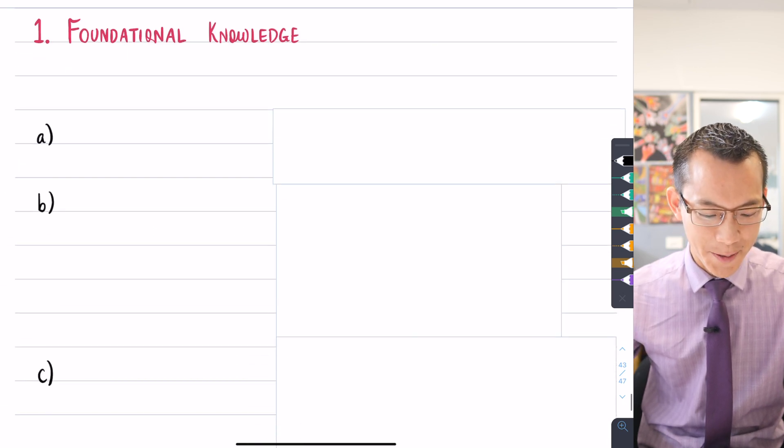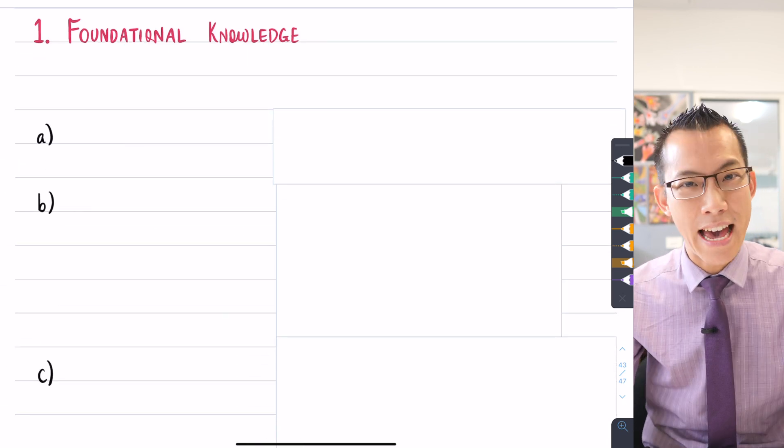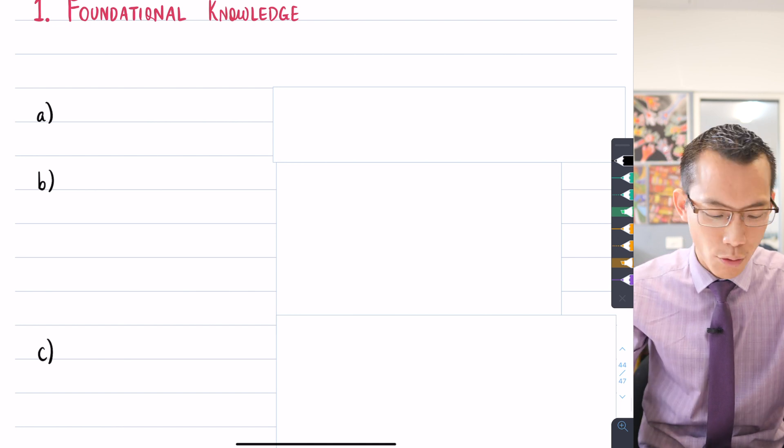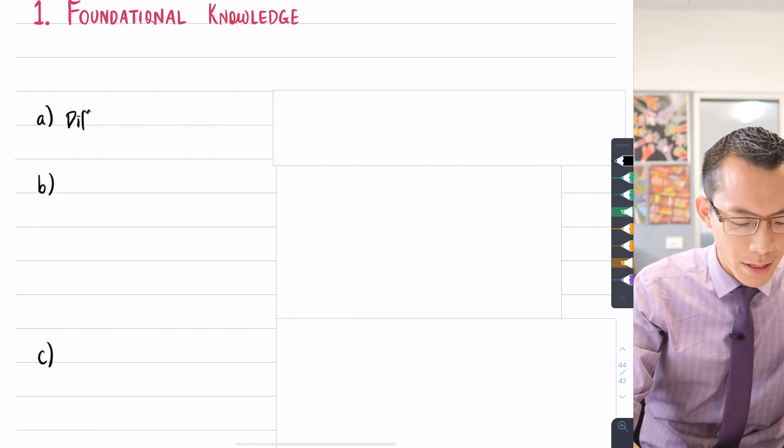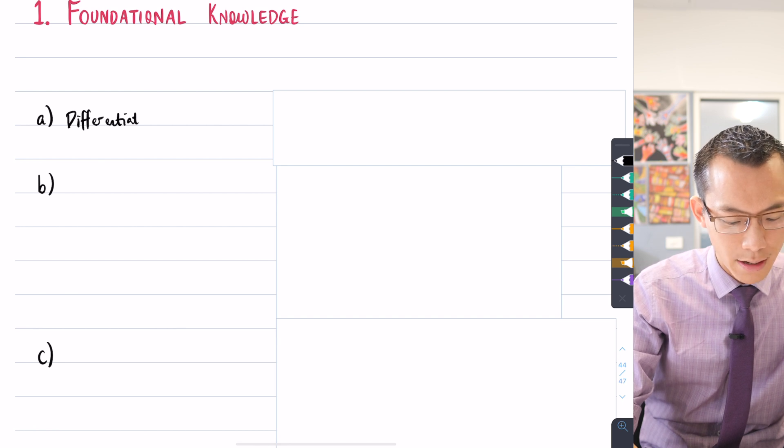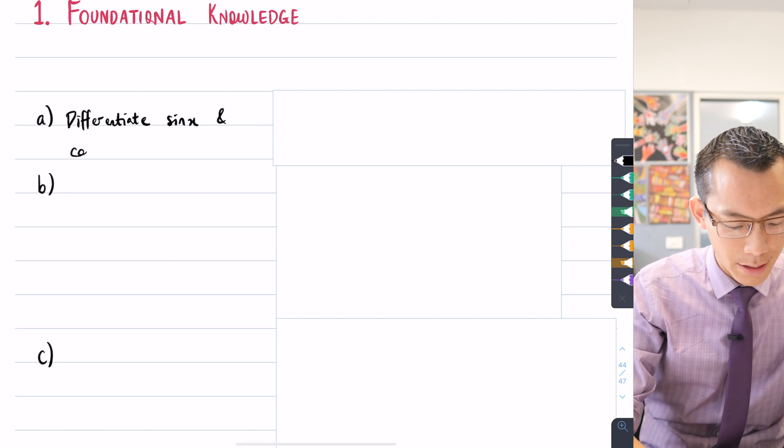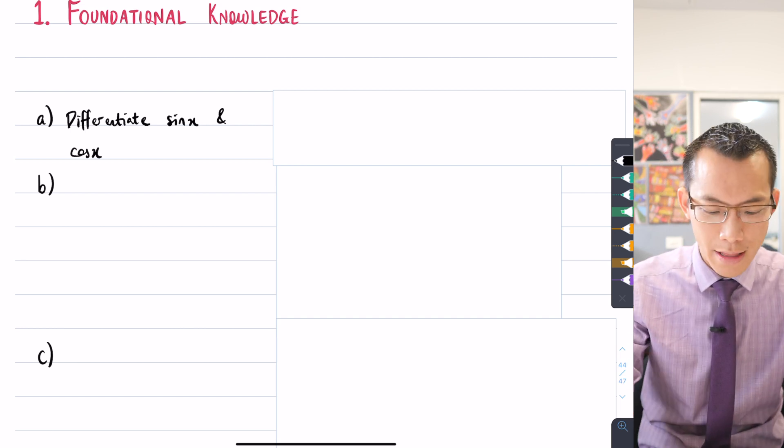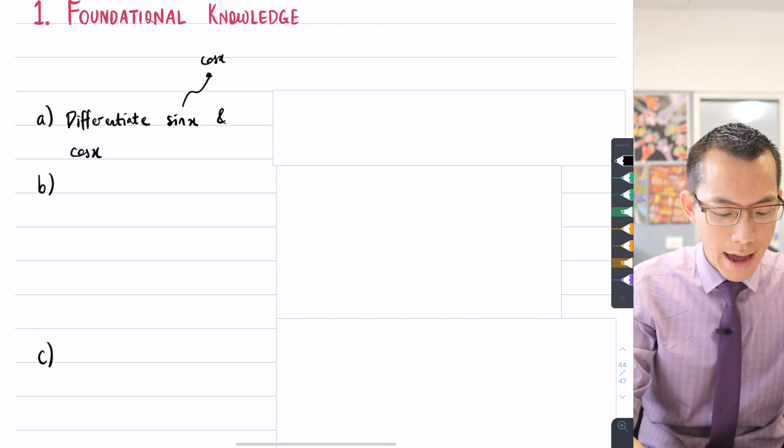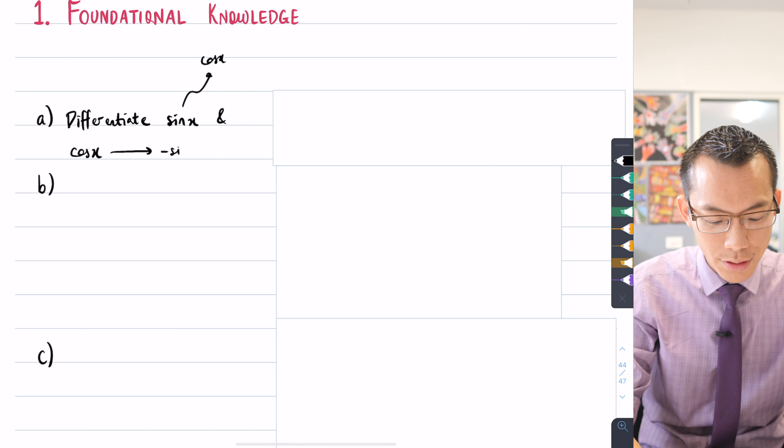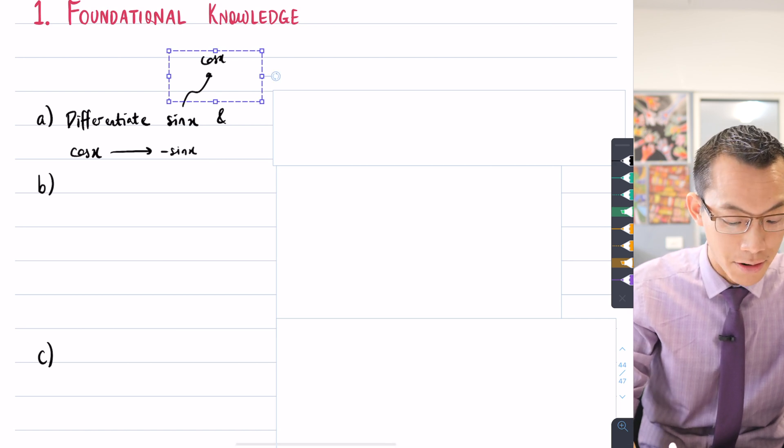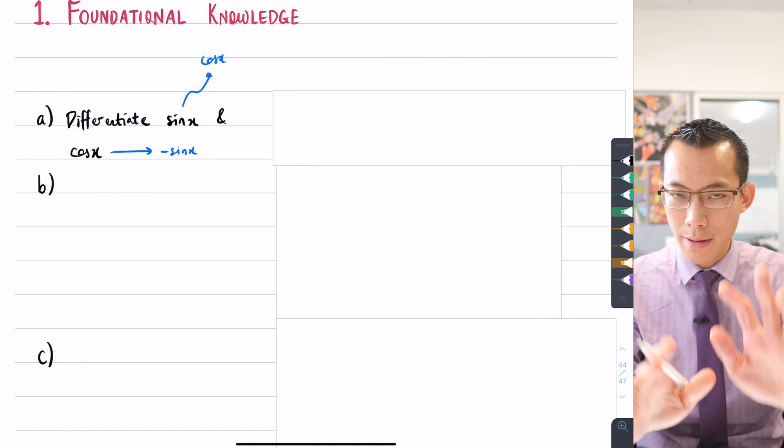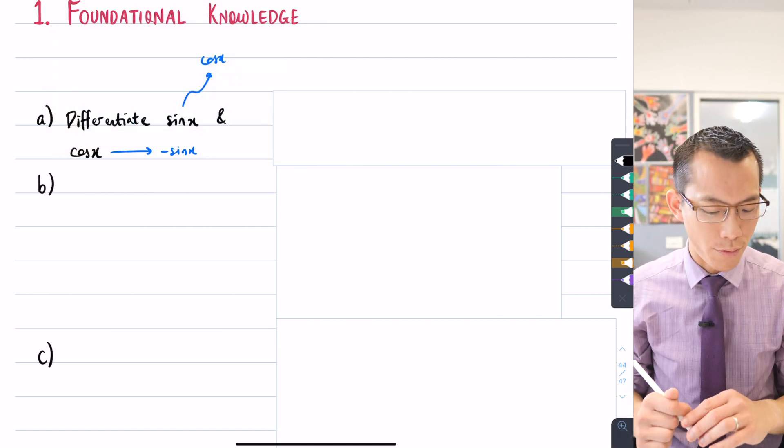So to start with foundational knowledge, there are three key ideas that you really need to have down pat in order to understand everything here. So the first one, which you might recall from last time when we had a look at the informal proof, is you need to know how to differentiate the basic trigonometric functions. So those being sin x and cos x. Now we're going to need that. I'm going to kind of assume that the results for those, namely that the derivative of sin x becomes cos x and the derivative of cos x becomes negative sin x. We are going to, I'm just going to assume them as taken results.